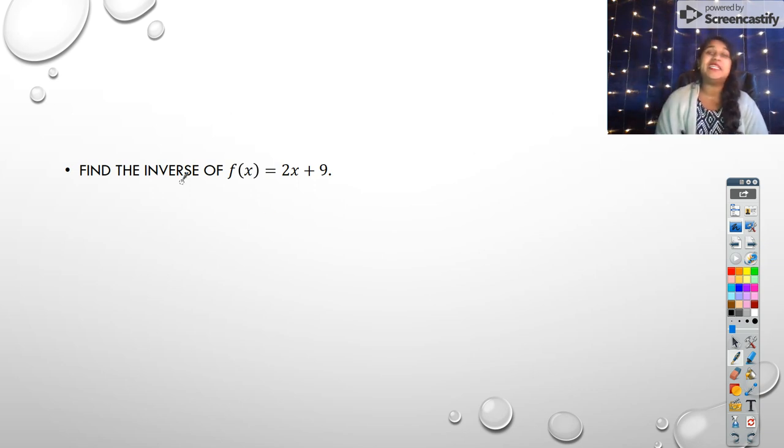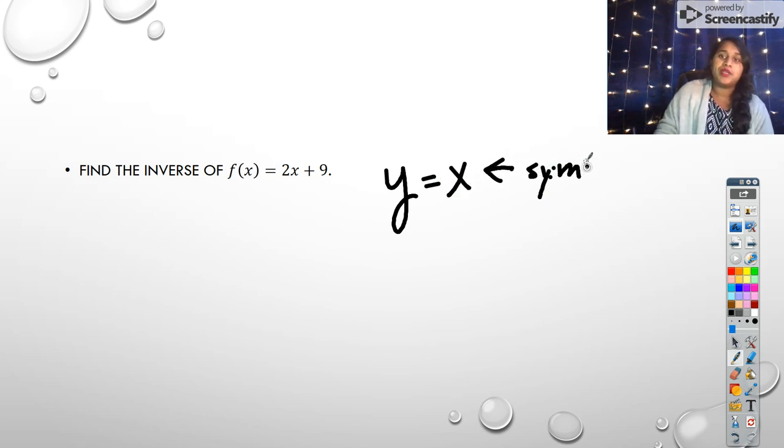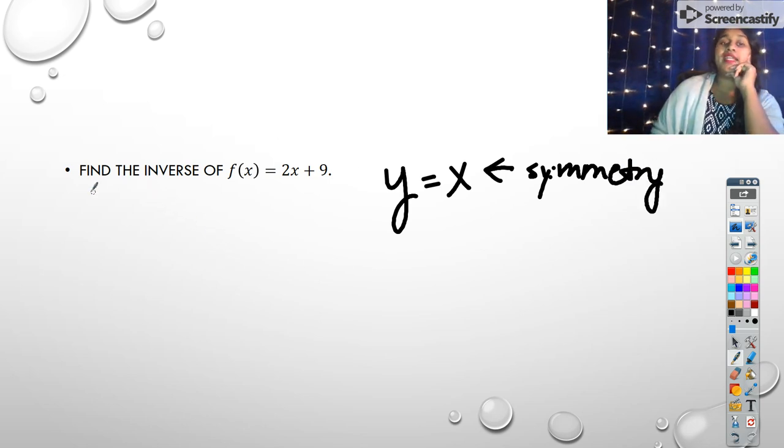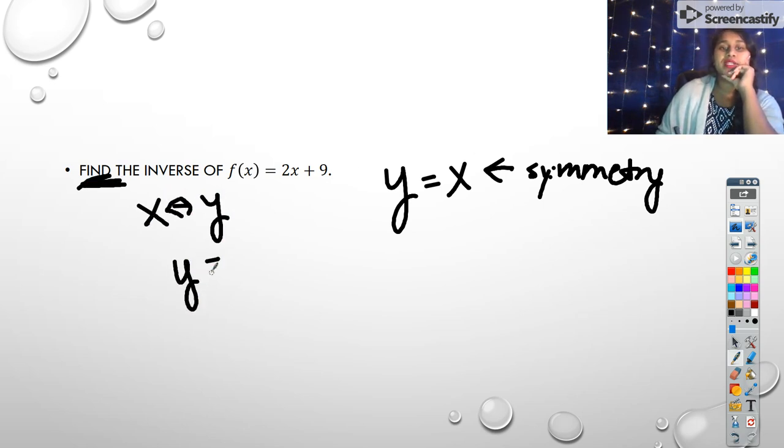Our next question is asking for the inverse. And what is an inverse? We talked about this already. The formal definition simply tells me that we have a symmetry over the y equals x line. I have to have that symmetry. And the other thing I can do when I find an inverse to actually solve for the inverse, I take my x and my y and I reverse them.